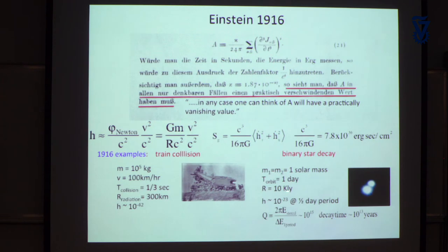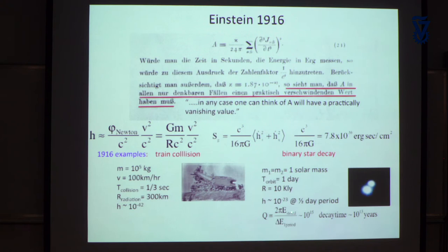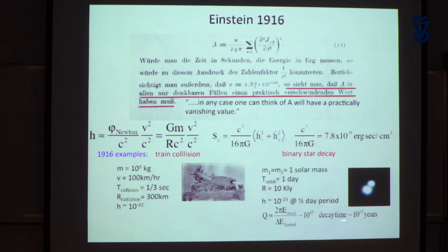What you get is a strain of 10⁻²³ — not outrageous in terms of what we can now talk about. But with a period of half a day, you compute Q — energy stored divided by energy radiated using the quadrupole formula from Einstein's 1918 paper — and get Q ≈ 10¹⁵. That means it takes about 10¹³ years before you'd see the orbit changing enough to detect in a telescope. Utterly hopeless.